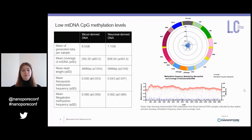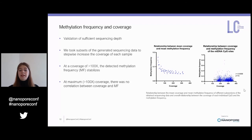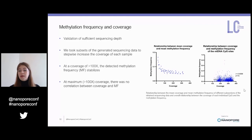Subsequently, we wanted to validate our method. In order to explore whether we got sufficient sequencing depth, we took different subsets of the generated sequencing data to stepwise increase the coverage of each sample. As seen in the figure, after coverage higher than 100x on average, the detected methylation frequency stabilized. Using the full amount of sequencing data — which exceeded 100x coverage of the mtDNA — we did not observe a correlation between the coverage of a CpG site and the corresponding detected methylation frequency. Therefore, we concluded that we had sufficient sequencing depth to reliably detect mtDNA CpG methylation.